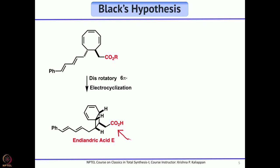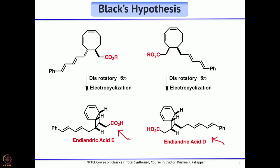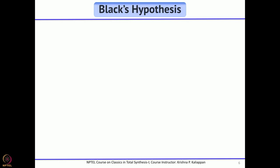The other product, via disrotatory 6π electrocyclization, was named endiandric acid D — also not isolated — which should form the precursor for making other endiandric acids. The key point was: starting with a tetraene, successive 8π and 6π electrocyclizations lead to the fused 6- and 4-membered ring system. If you start with different substituents at the terminal carbon, analogous cascades lead to other cyclooctatriene intermediates.